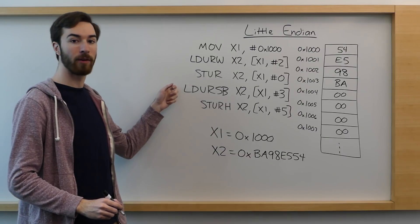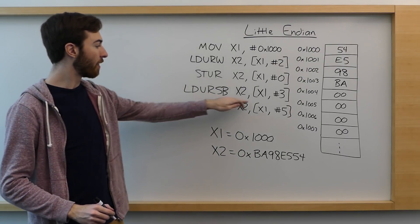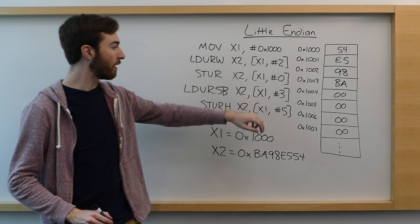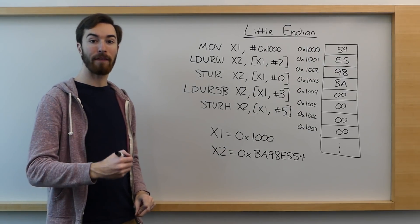Then we come to the loading a single byte command, but it's sign-extended. The address that we go to to load in is 1003, so this BA. BA, the leftmost bit is a one,